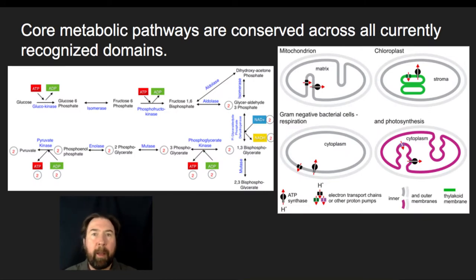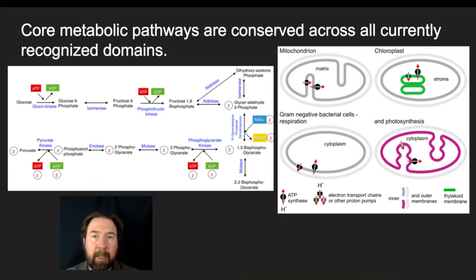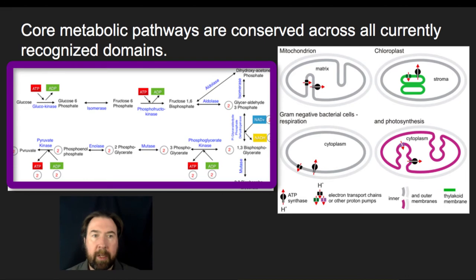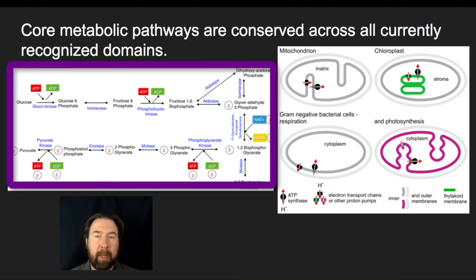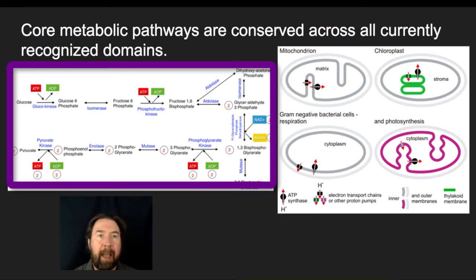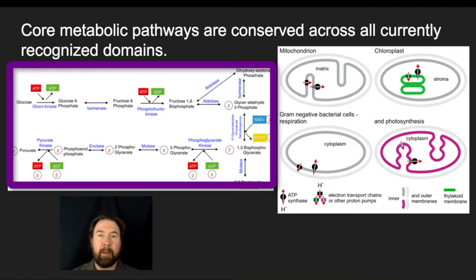Other core metabolic pathways are conserved across all currently recognized domains. We can look at the process of glycolysis — turning glucose into pyruvate — found in bacterial cells and in all eukaryotes. Nearly all cells have some process of breaking glucose down; it's a very highly conserved process found throughout the domains.